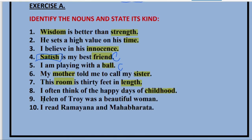Coming to sentence number nine: 'Helen of Troy was a beautiful woman.' There are three nouns — Helen, Troy, and woman. Troy is the name of a place and Helen is the name of a woman. Woman is a common noun. Helen is the name of that particular woman, which makes it a particular term — that is why Helen is a proper noun. And Troy is the name of a place, so it is also a proper noun. It is not a generalized term; it is a particular name of a place.